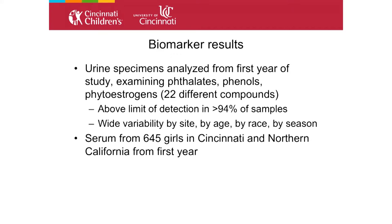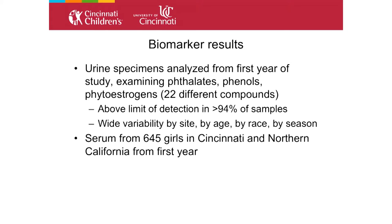They may be converting adrenal androgens peripherally into estrogens and stimulating breast tissue growth. We looked at 22 different compounds in a baseline analysis of the three Ps — phthalates, phenols, and phytoestrogens. We were above the level of detection for all compounds in greater than 94% of specimens. There was wide variability by site — for example, PBDEs were much higher in California where every kid was exposed to flame retardants — and also by age, race, and season. BP3, the main component in sunscreen, was much higher in summer months.